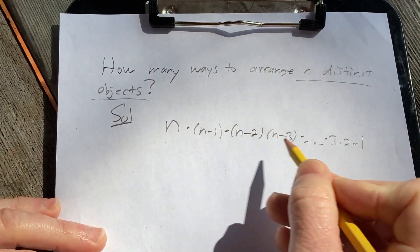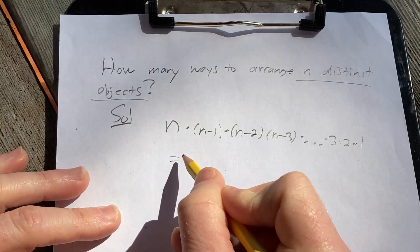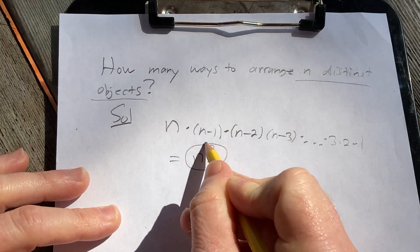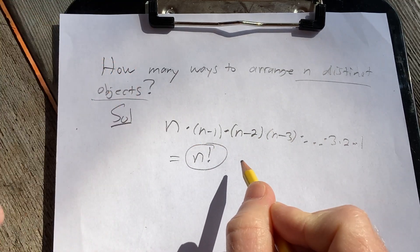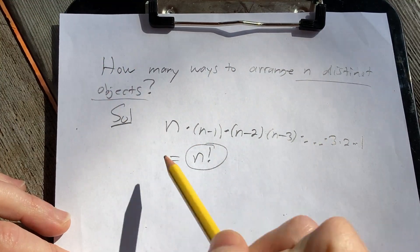This product is special. It's called the factorial. And it's denoted by n factorial. So there's n factorial ways to arrange n distinct objects.